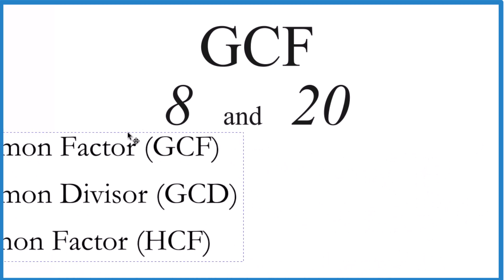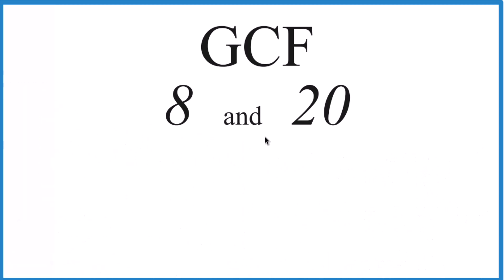So what we'll do is we'll find the factors of 8 and 20, look at the ones in common between 8 and 20 here, and just use the greatest one. So for 8, 1 times 8 that would equal 8, and 2 times 4, but that's it.